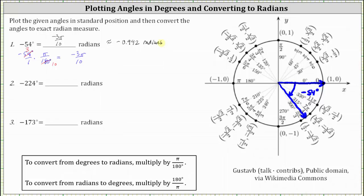For number two, we have negative 224 degrees. The initial side is along the positive x-axis, and now we rotate 224 degrees clockwise because the angle is negative 224 degrees. Half a rotation clockwise is negative 180 degrees. We need to rotate clockwise another 44 degrees, which would be approximately here. This is the terminal side of negative 224 degrees.